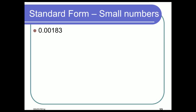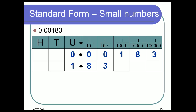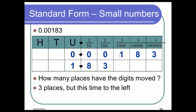What about 0.00183? We'd have to move the decimal 1, 2, 3 places before we get to the first digit and a number between 1 and 10. So it's 1.83 × 10⁻³. A quick tip: if you count the zeros including the one before the decimal for these small numbers, it'll always match the negative power. But I'd use the moving the decimal point method every day of the week.